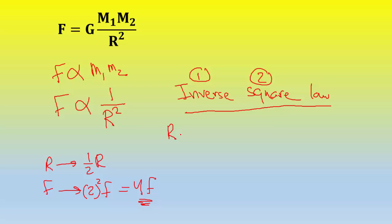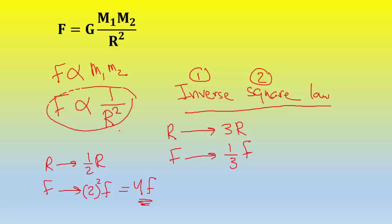Now assume you change the distance from r to 3r — you triple the distance, for example from 50 meters to 150 meters. What will happen to the force? You take the inverse of the factor 3, which is 1/3. But the force is inversely proportional to the square of the distance, so you must first inverse then square: the force decreases by 1/9 of its original value.